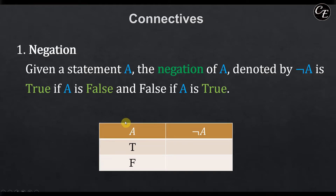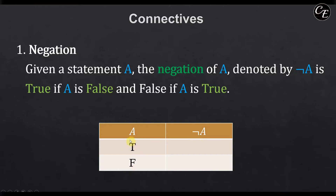For the truth table of the negation connective, the first column enumerates all possible truth values of a. From the definition of a statement, a can have a truth value of true or false. Then not-a, which is the application of the negation connective on a, will be the inversion of those truth values. So if a is true, then not-a is false; and if a is false, then not-a is true. This is the truth table for the negation connective.